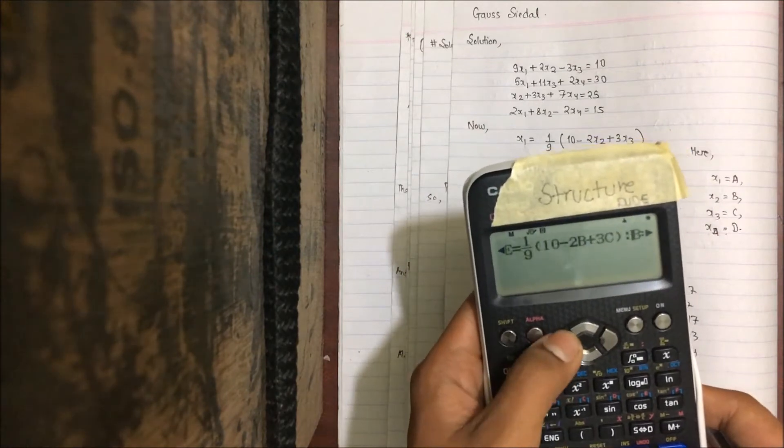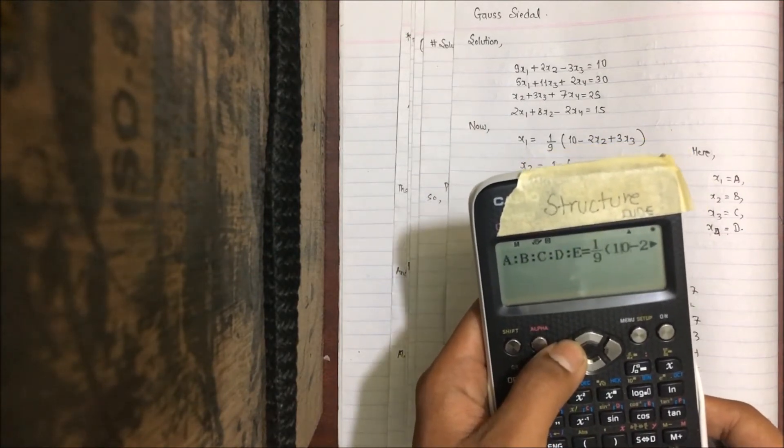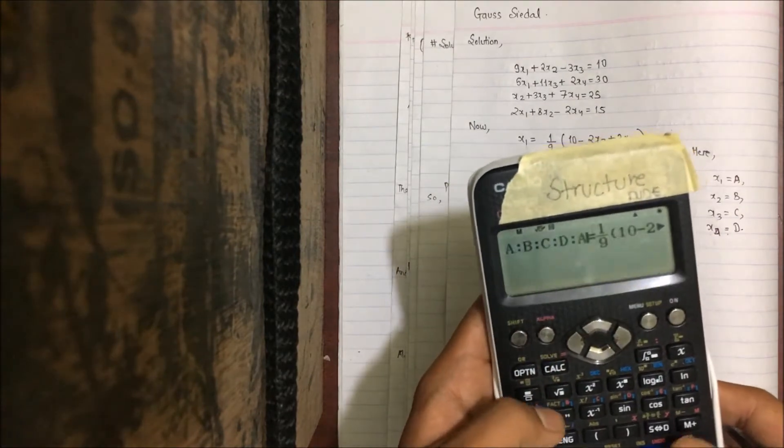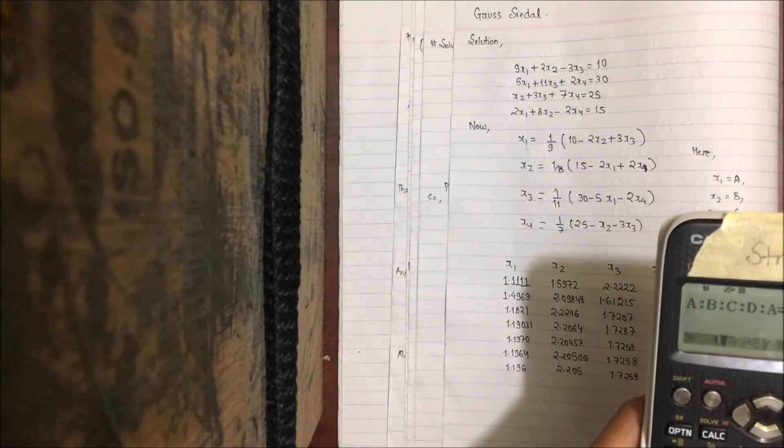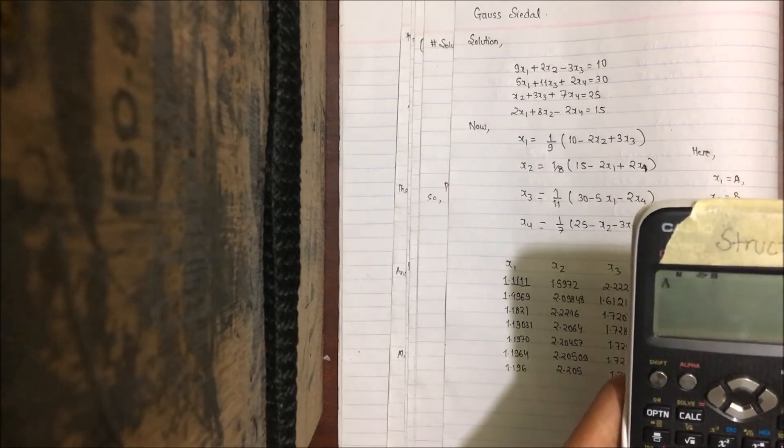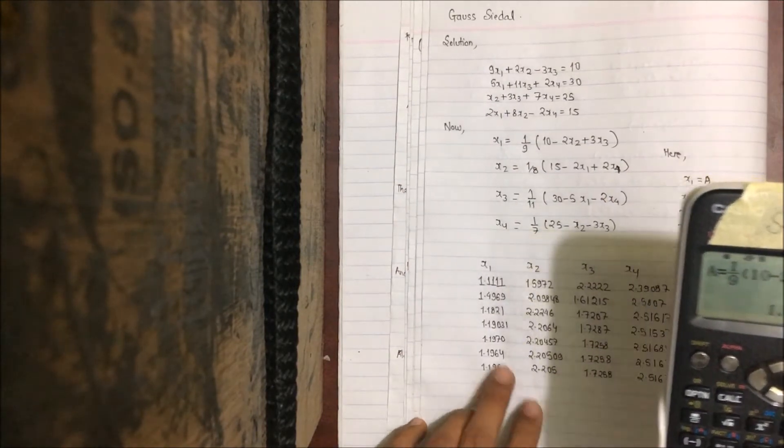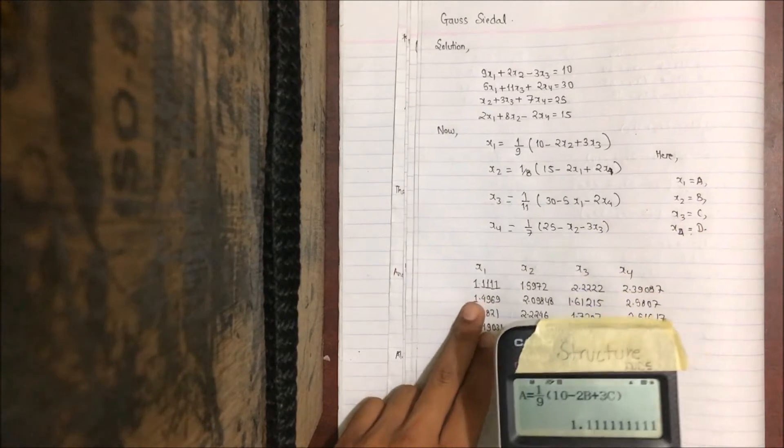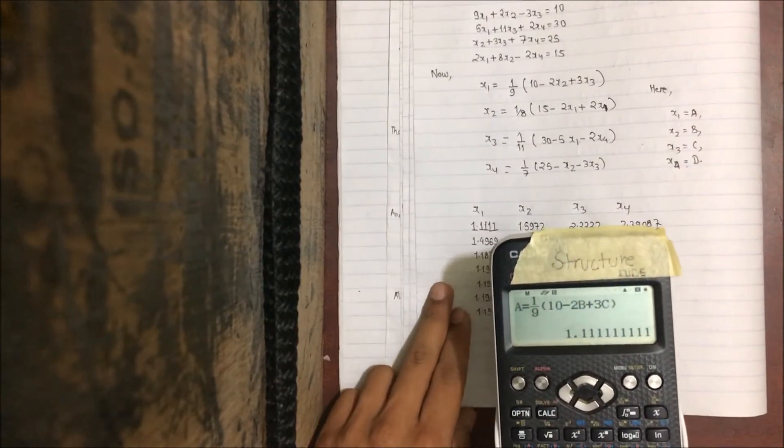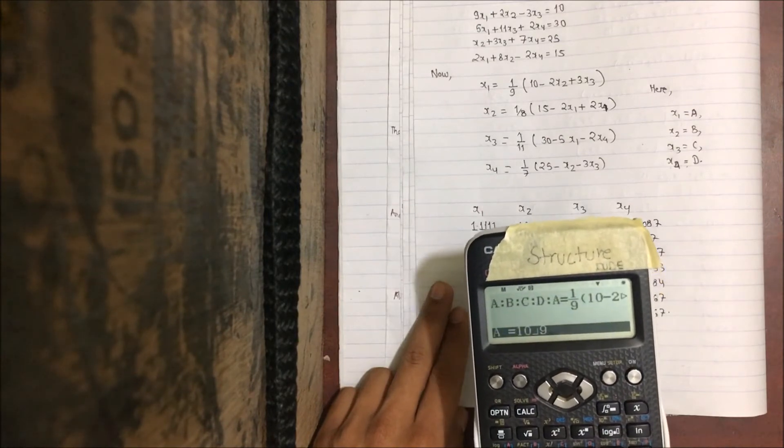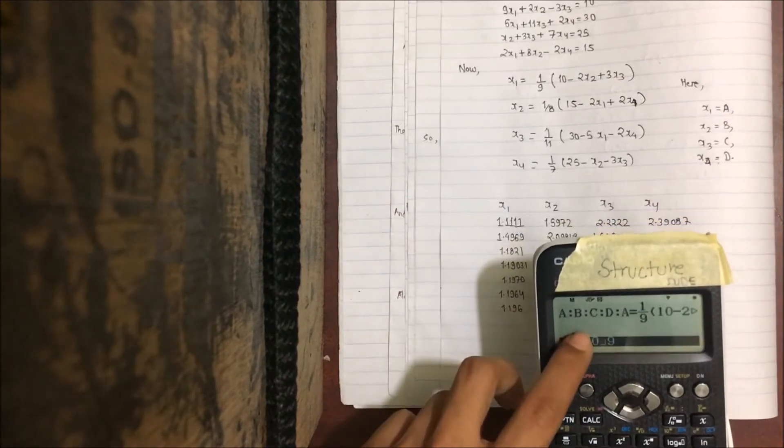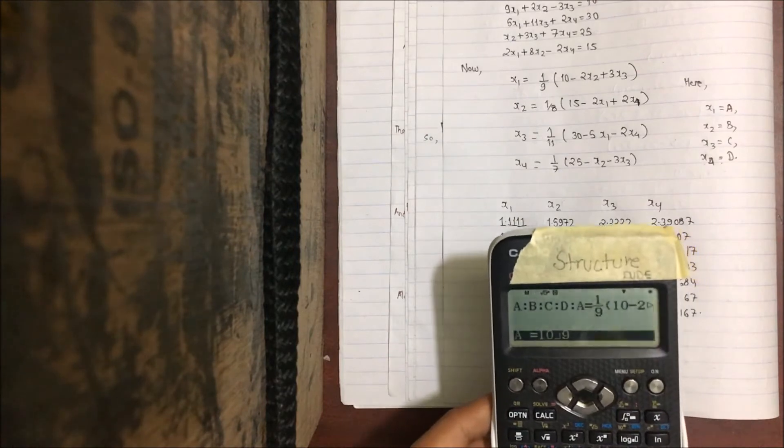Then the similar process goes on with initial values of 0, 0, 0, 0. You'll get values like 1.11, 1.5972, 2.22. The value 10 by 9, which equals 1.11, is already there, so you just have to press the equal sign.